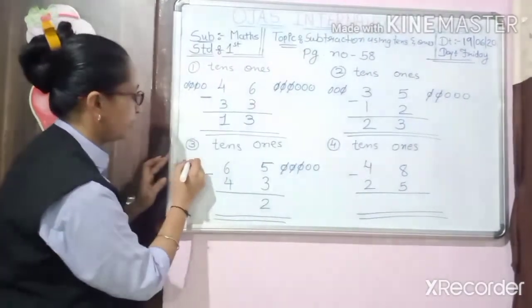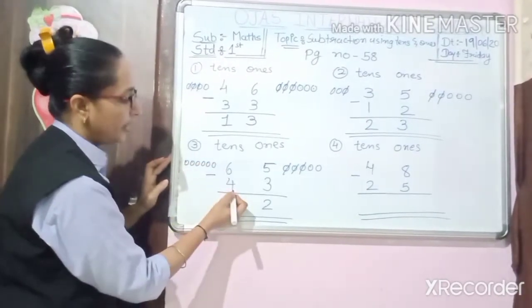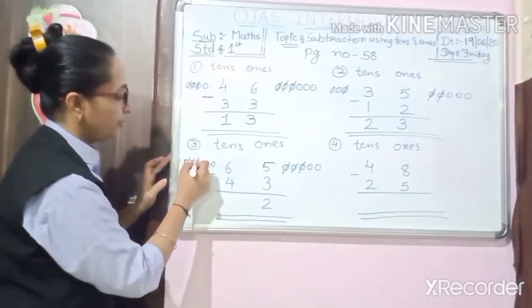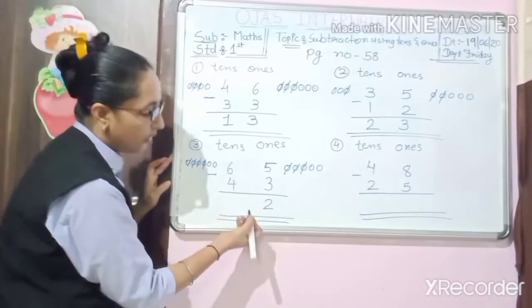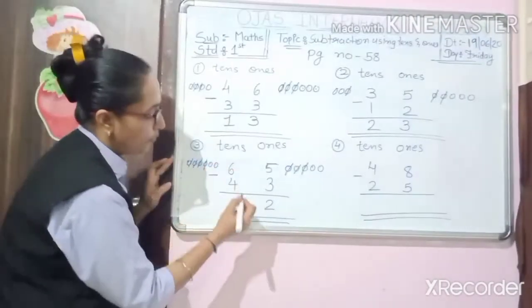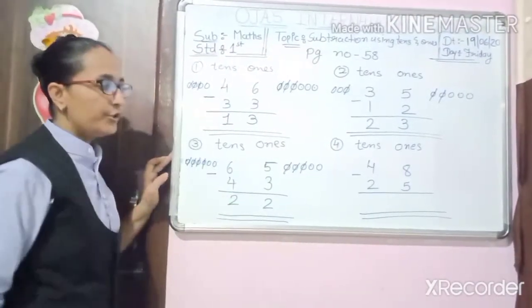Then 1, 2, 3, 4, 5, 6. Here 4 is there. So 1, 2, 3, 4 circles we have to cut. Then remain 2 only. So we have to write here 2.